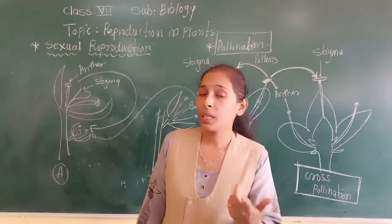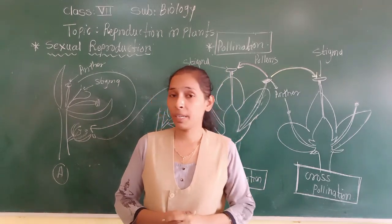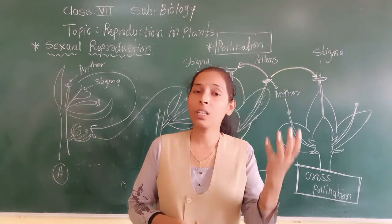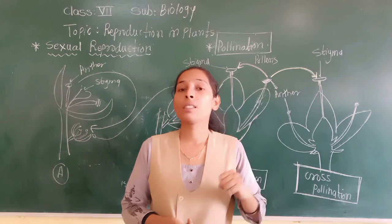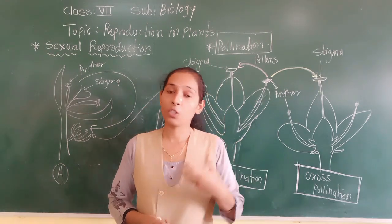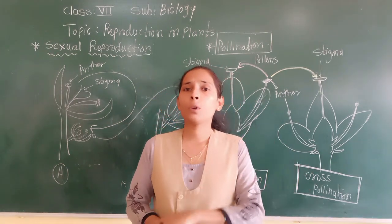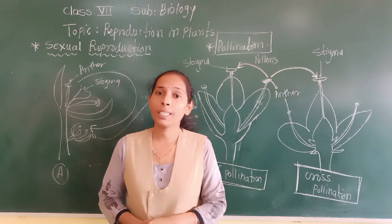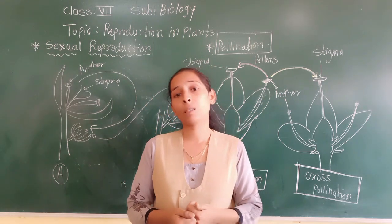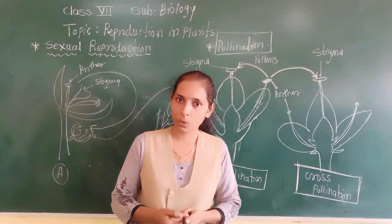Now you understand why petals are very bright in color — to attract insects. In this way, insects help to carry out the pollination process. This pollination process can also take place with the help of wind and water.